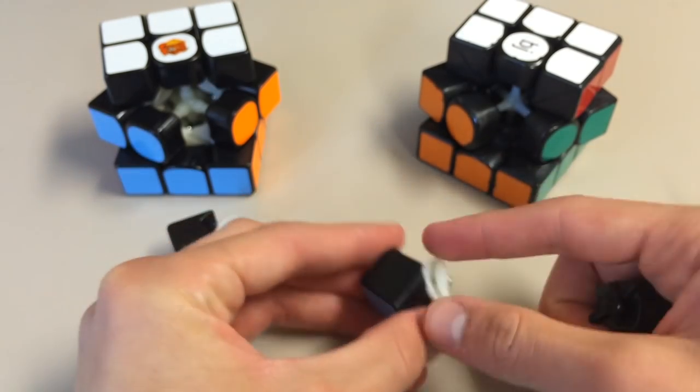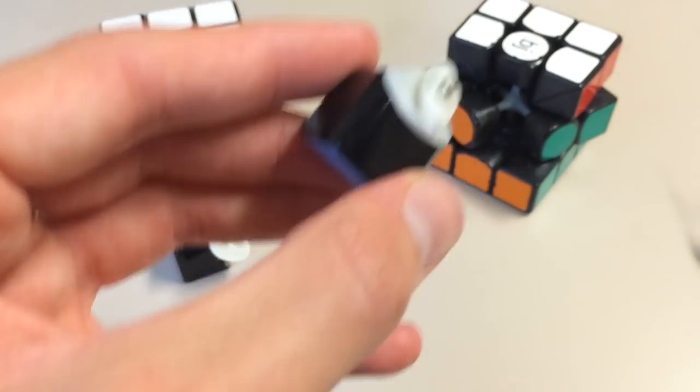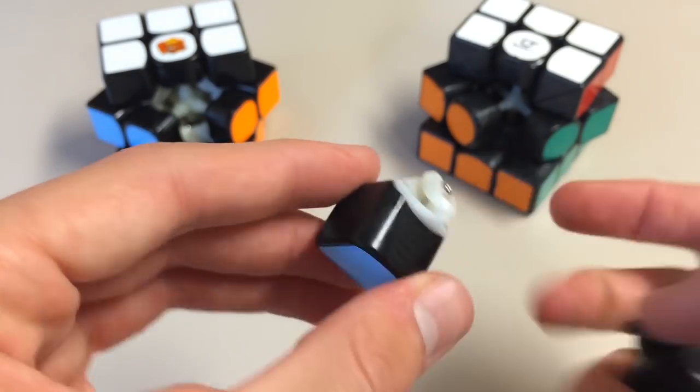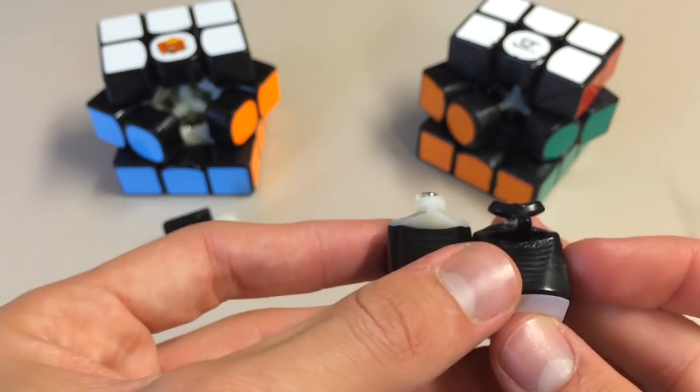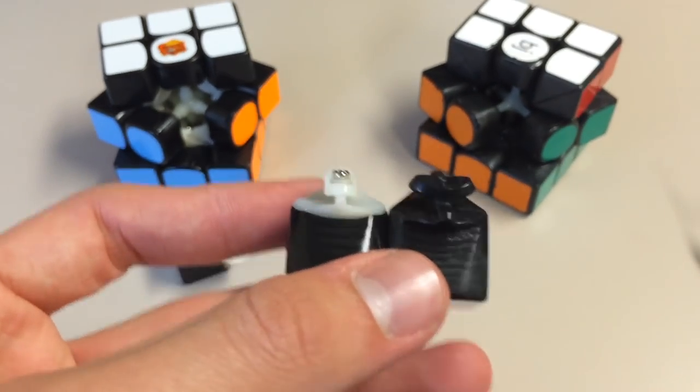So let's take a look at the edges now. It's the same concept basically where you can take out this part. This lighter part is different than the black part, and you can unscrew it and add weights, I believe.